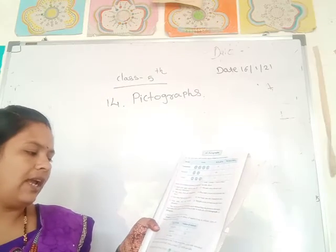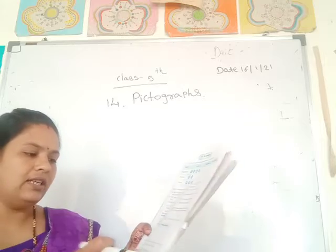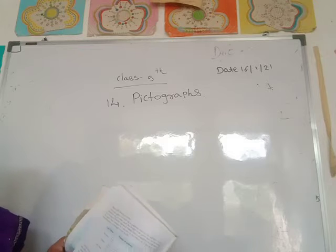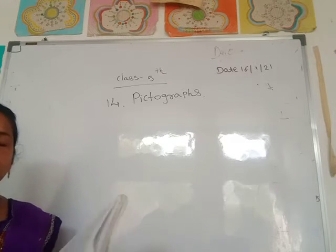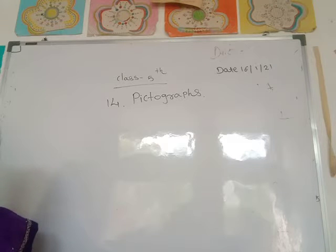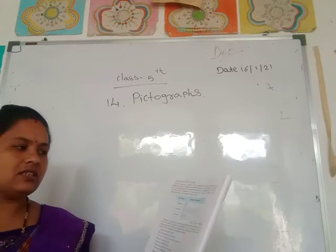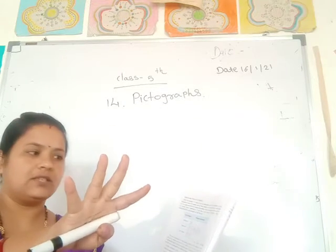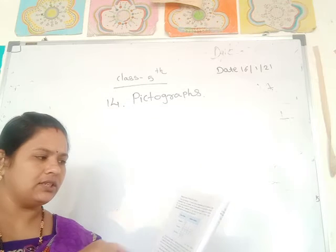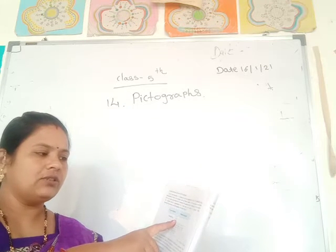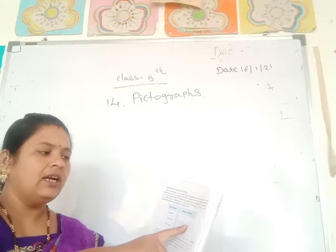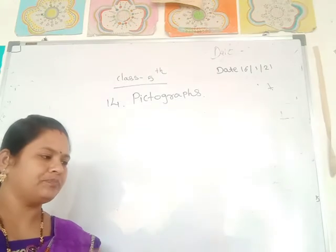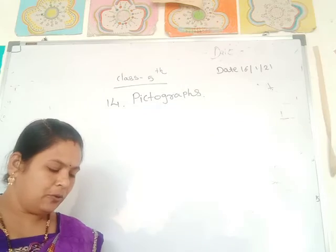What icon shall we use for students? Surely a smiley will be just right. The numbers given are 4, 20, and 8. Instead of numbers, use pictures. Should we draw 20 faces for 20 children? No. One picture equals 4 students. Bungalow has 4 students, so draw 1 picture. Apartment has 20, so draw 5 pictures. Row houses has 8, so draw 2 pictures.